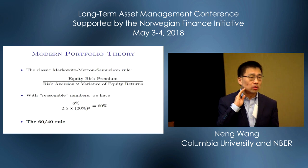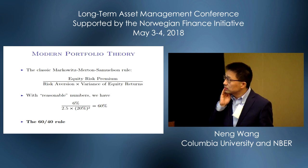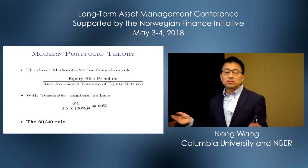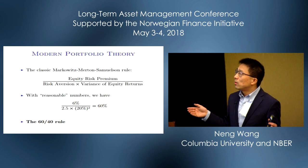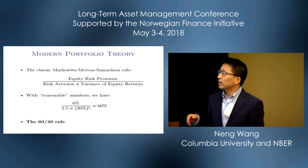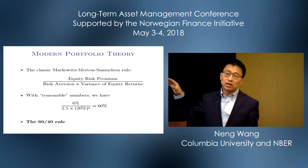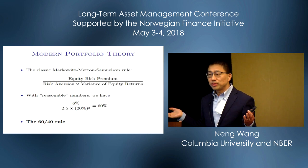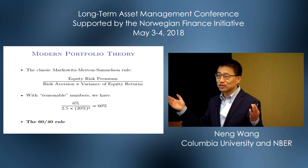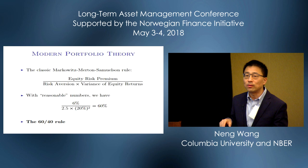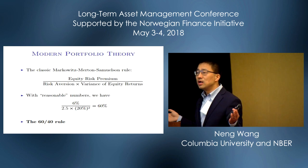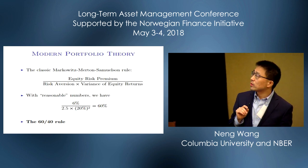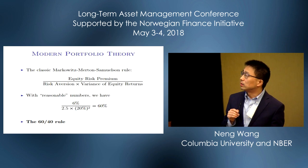Let's go back to asset allocation 101 — what we teach MBA students. How would you allocate in a world where you choose between public equity and a risk-free asset? If you do the standard Merton-Samuelson portfolio allocation, you take the risk premium — call it 6% — and the volatility of equity markets — call it 15-20% — and a risk aversion between 2 and 5. Sticking to 2.5 gives a very nice 60-40 allocation rule, which is what's often quoted in practice.